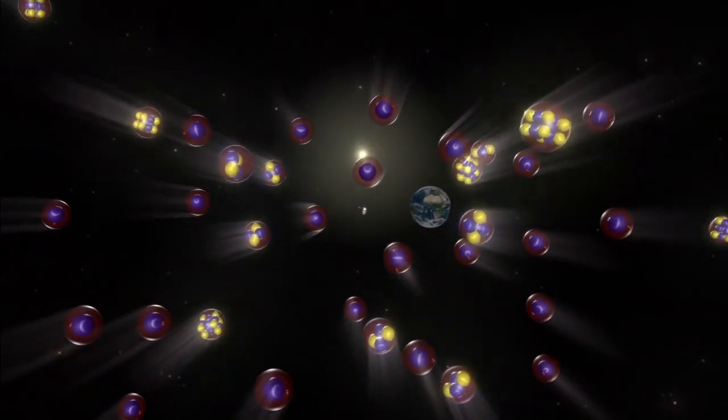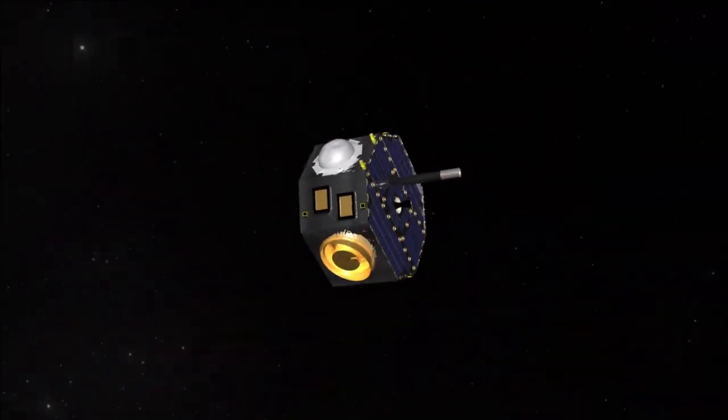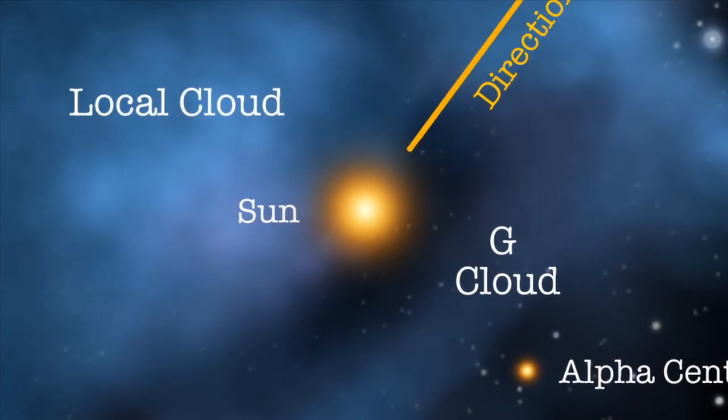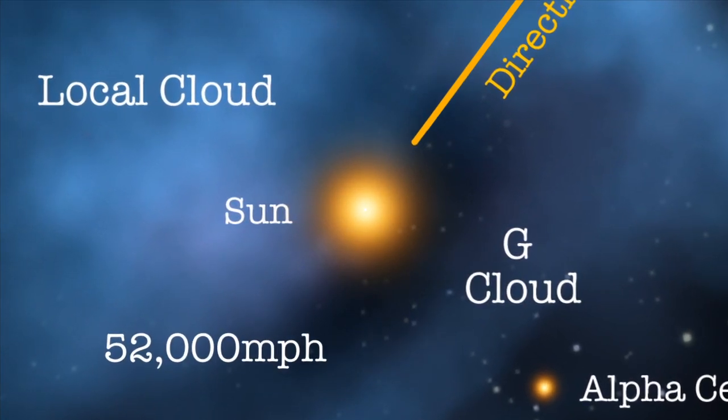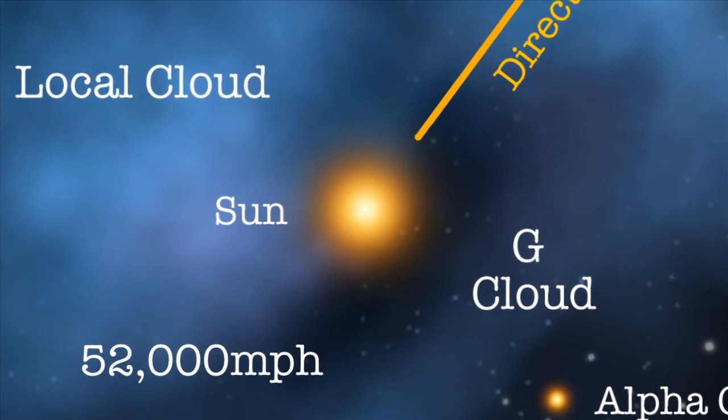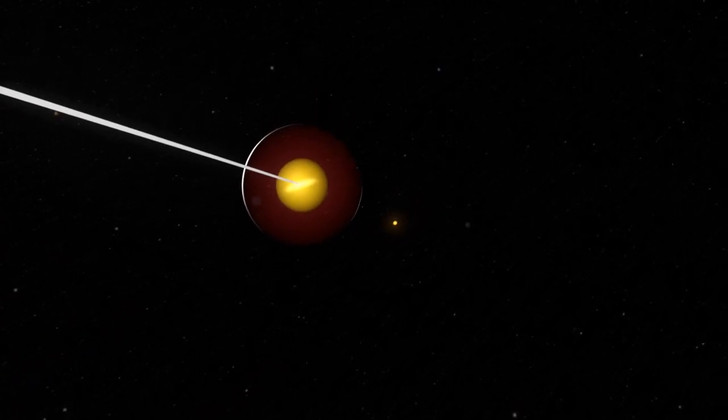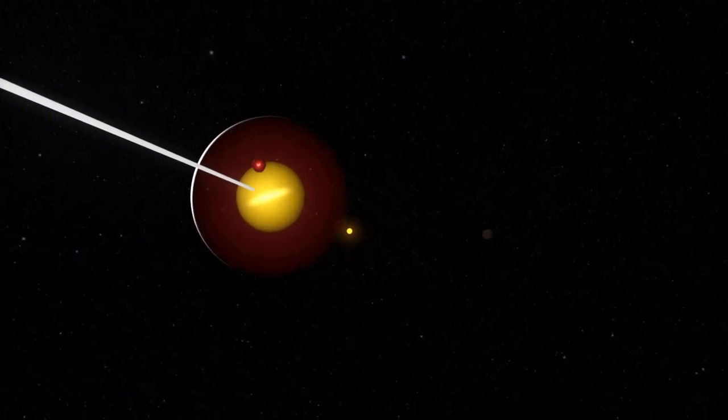The measurement of these atoms by IBEX has enabled scientists to get a better grasp on the environment around our solar system. The speed of the galactic wind registered around 52,000 miles per hour, which is about 12% slower than previously thought. At that speed, it still takes about 30 years for each atom to reach IBEX from the edge of the solar system.